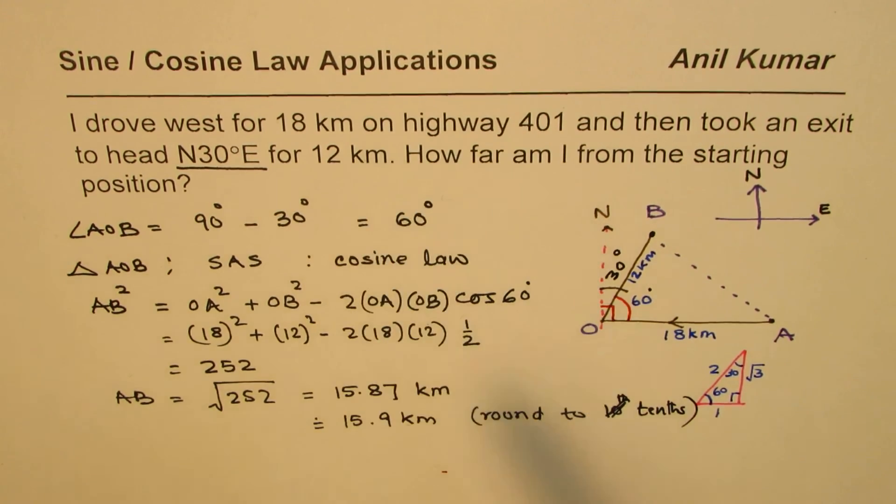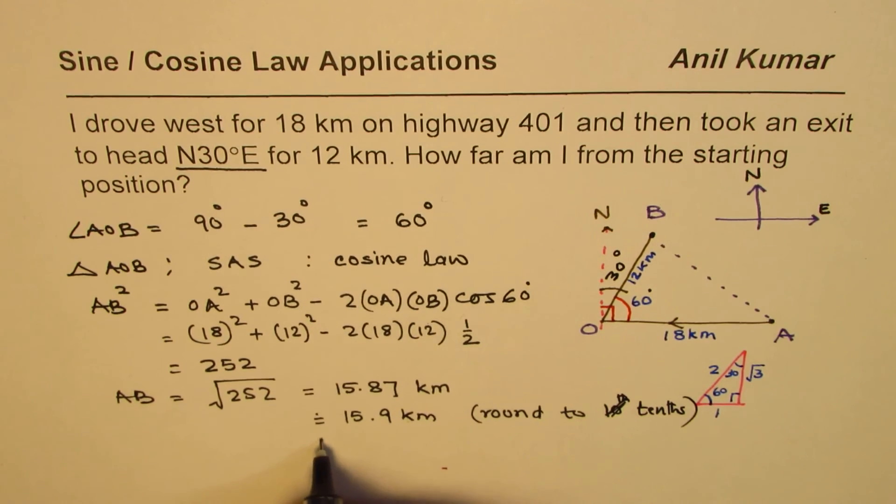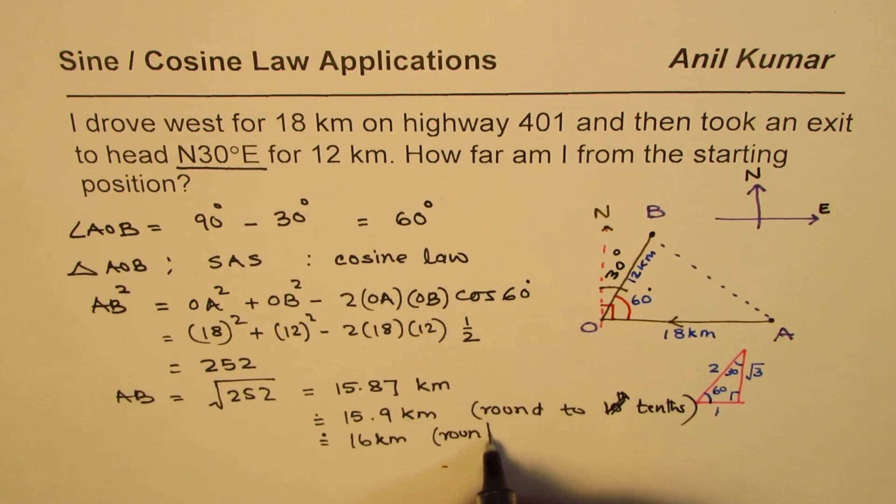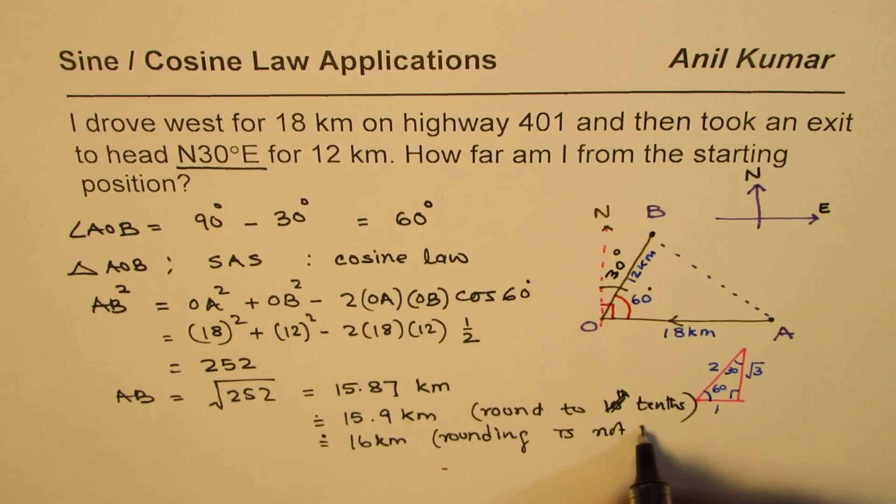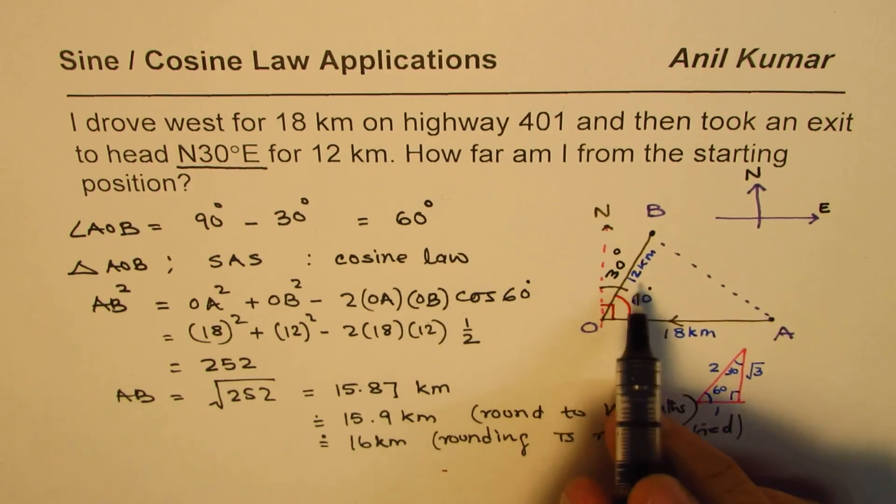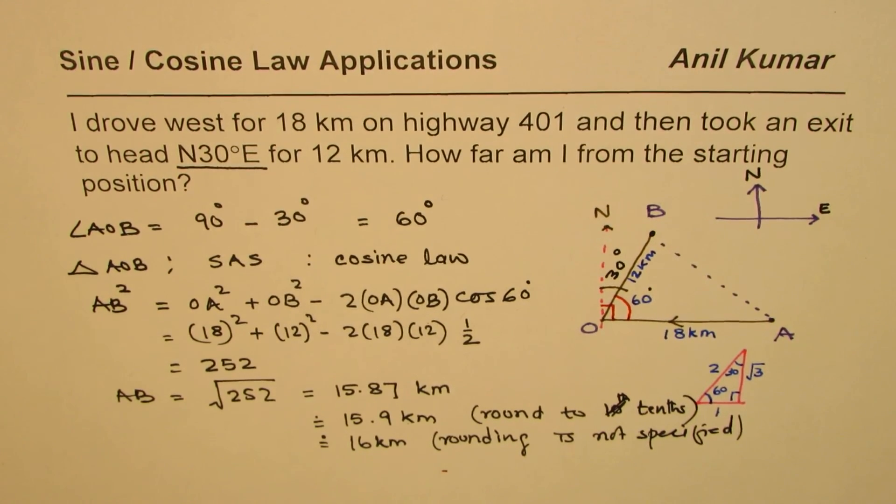If nothing is given to you, then in such case I should have actually rounded to a whole number. So let me write this as 16 kilometers. If rounding is not specified, since all other values are given as whole numbers, we'll keep the answer also in whole numbers. That is the reason for us to keep this answer as a whole number, which is rounding to whole number, 16 kilometers will be our answer in this particular case.